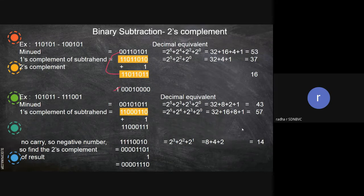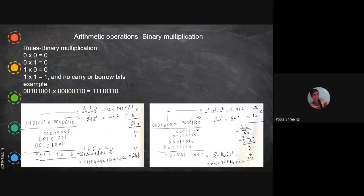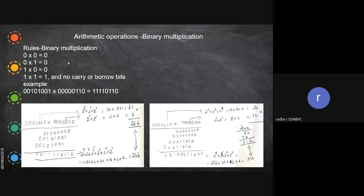Students confirm understanding. Now, any doubt so far in binary subtraction and addition? Shall I proceed to the multiplication? Okay, binary multiplication. Now the basic rules: zero multiplied by zero gives zero, anything multiplied by zero gives zero — same rule here. One times one gives one, and there's no carry or borrow involved.